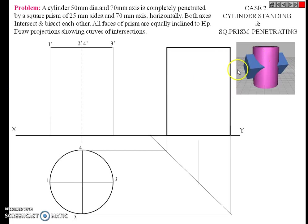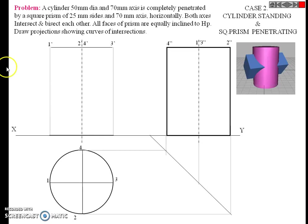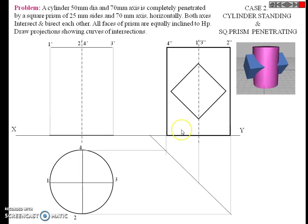If the observer is from this side, this half portion of the cylinder is completely visible. Name the points 4 double-dash, 1 double-dash, 2 double-dash, and 3 double-dash. After drawing the top view, front view, and side view of the first solid, proceed to the next step.